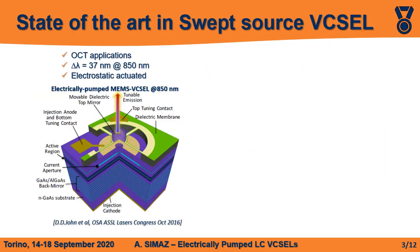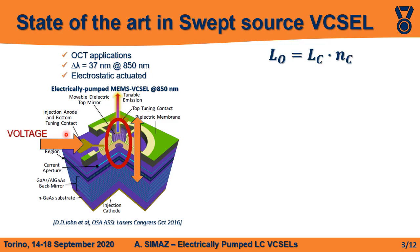Today, the state of the art in swept source pixels is represented by MEMS fabrication. Here it is shown an example from John et al., designed to be used in OCT applications. The tuning range achieved by this device is 37 nm at the central wavelength of 850 nm, and it is an electrostatically actuated device, which means that there is a common anode where we inject the current inside the active material to reach the inversion population condition, thus lasing. We apply on the same anode the voltage through a suspended top movable mirror. By applying different voltages, the cavity length can be varied, and accordingly to this formula, we can change the optical length and therefore the emission wavelength.